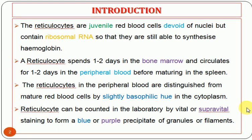Reticulocytes in the peripheral blood can be distinguished from mature red blood cells by a slightly basophilic hue in the cytoplasm. The RNA fragment in the reticulocyte gives a blue color — the basophilic hue — which normal RBC do not have. We can count reticulocytes in the laboratory using supravital staining, which gives a blue or purple color precipitated into granules or filaments.